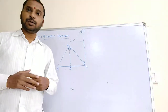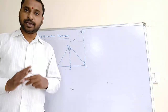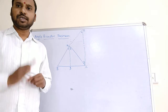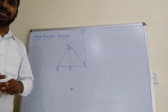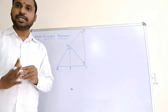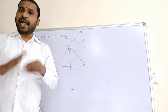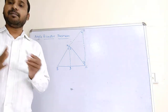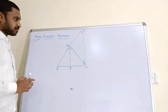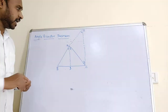Good morning students. Today we are going to see a very important theorem for Class 10 — the Angle Bisector Theorem, which will be used in Class 11 and 12, and whenever you deal with geometry. The Angle Bisector Theorem is also called the Angle Bisector Property. So here we have a proof which we will first try to understand.